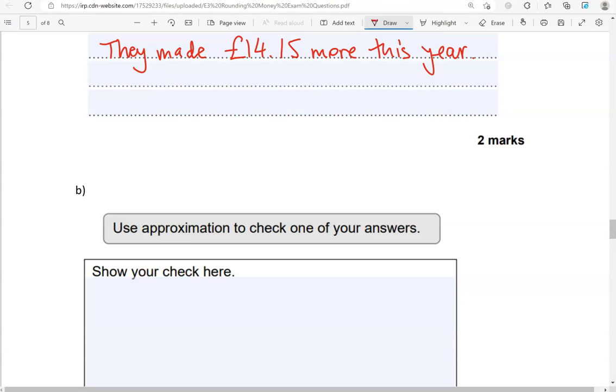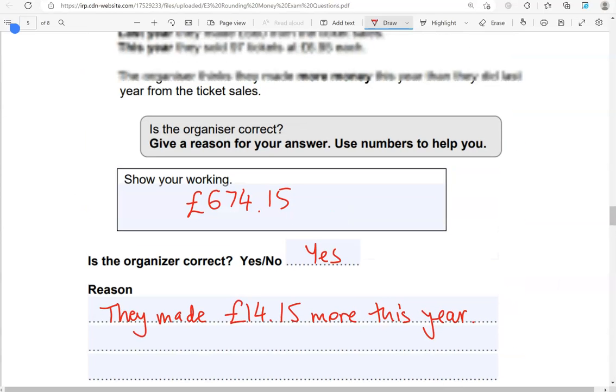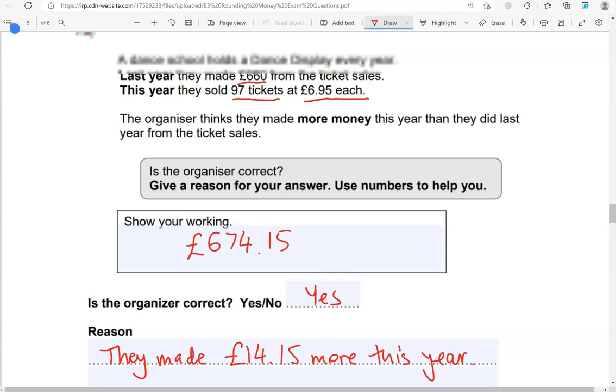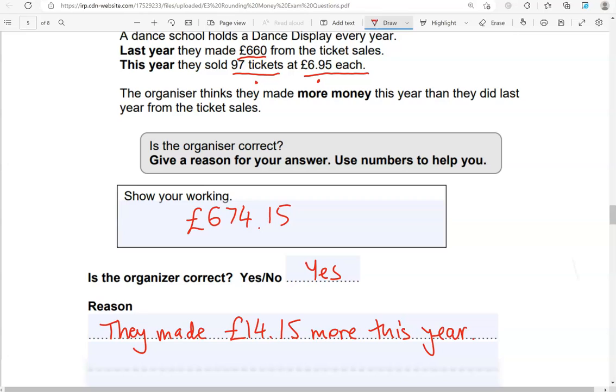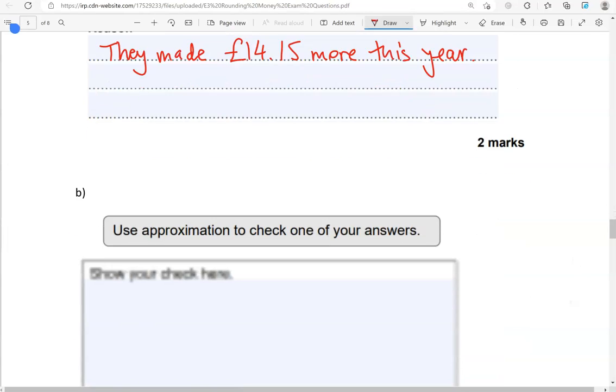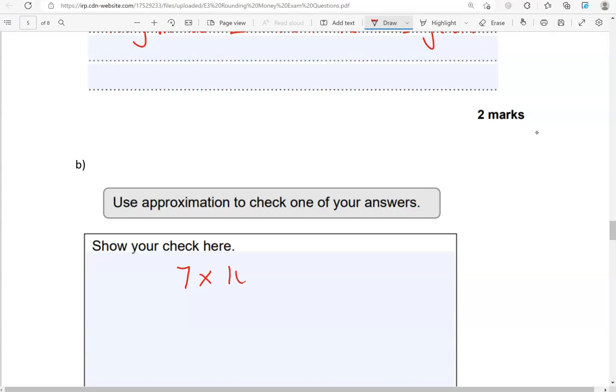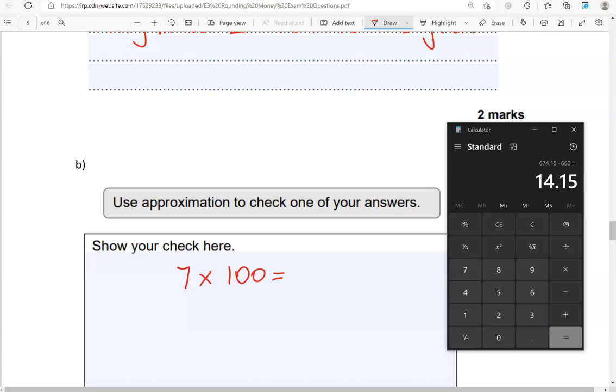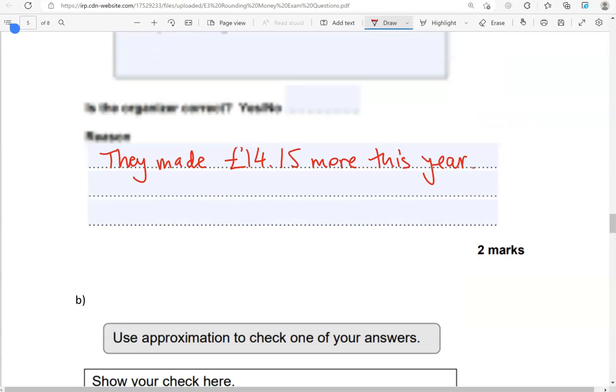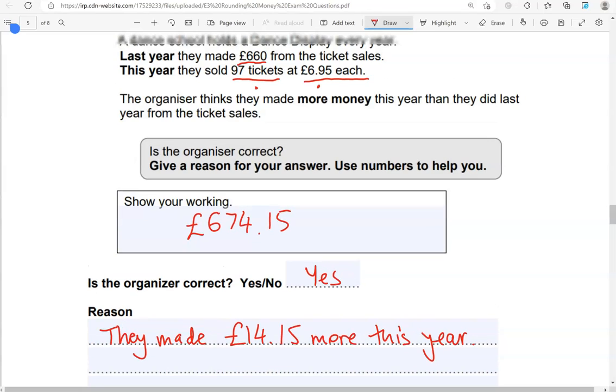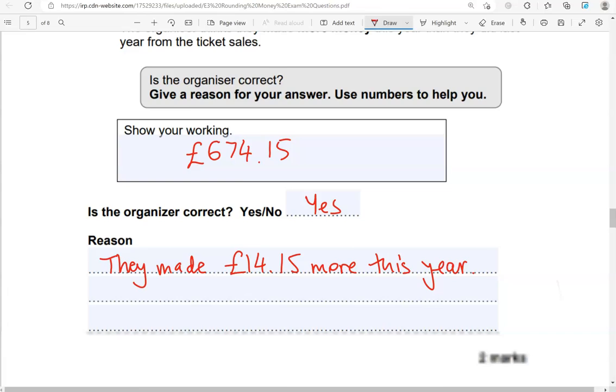Use approximation to check one of your answers. What we can do is round this to £100 and this to £7. So that shows that this number we had here, £674.15, was pretty close to it.